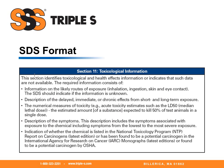Section eleven, toxicological information. This section identifies toxicological and health effects information or indicates that such data is not available. The required information consists of information on the likely routes of exposure such as inhalation, ingestion, or skin and eye contact. It will also include a description of the delayed, immediate, or chronic effects from short or long-term exposure, the numerical measures of toxicity such as the LD50 or median lethal dose, description of the symptoms from the lowest to the most severe exposure, and whether the chemical is listed as a carcinogen or possibly a sensitizer or endocrine disruptor.